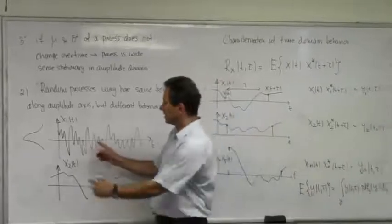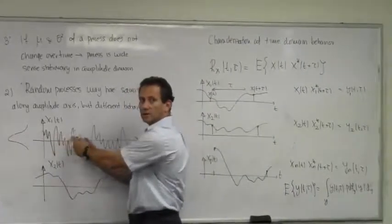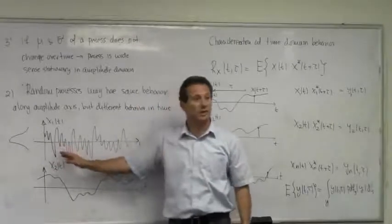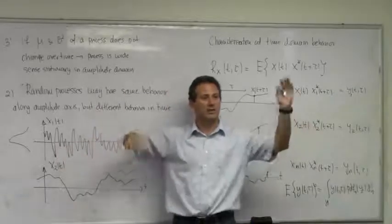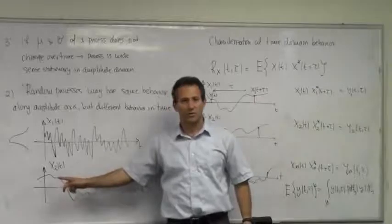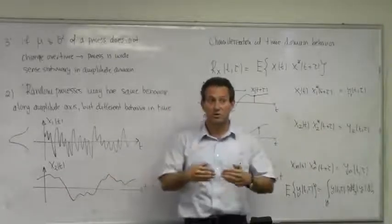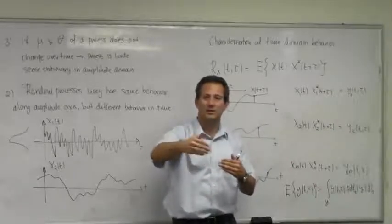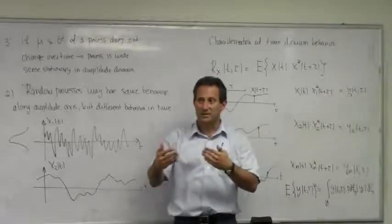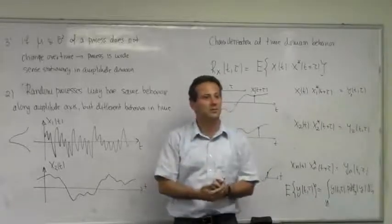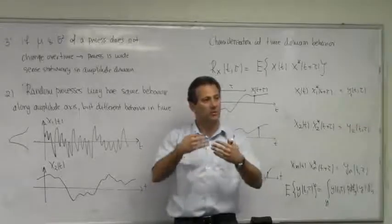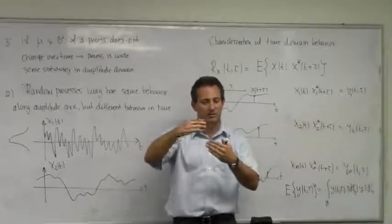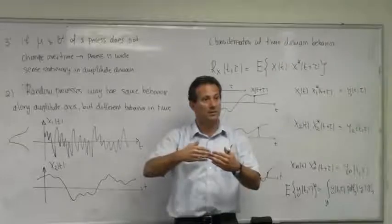If I look at this one, even for small τ this value has nothing to do with this one. In this case for small τ the values are uncorrelated, they can be anything. But here for small τ the values are correlated. If I know the value of the function at this time I can pretty much guess what happens a little bit away. If I can guess, that means I'm capturing some sort of time domain behavior. If my autocorrelation function is slowly moving or does not change rapidly as a function of τ, then my signal is slowly moving in time.